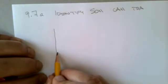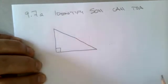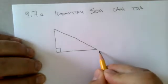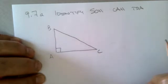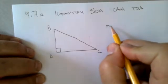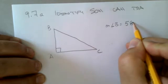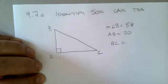In the event that we have a right triangle, and we are looking at a particular angle in that triangle, for example, let's go with ABC. Let's say that we're given that the measure of angle B is equal to 58, and that AB is equal to 20, and we're supposed to find what BC is equal to.